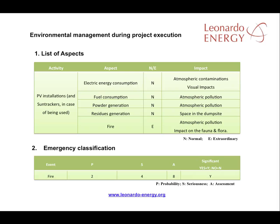Each type of emergency is scored according to the probability that it will create environmental impacts and the seriousness of those impacts. By multiplying scores for probability by the score for seriousness, you'll establish a significant score that will help you establish your management priorities.